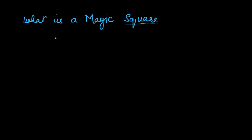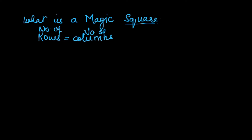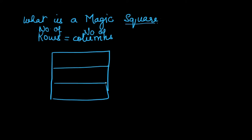As it is a square, the number of rows and columns will be the same. So in a magic square, suppose you have one which is 3 rows and 3 columns — the size of the magic square is 3 by 3. The first property is: number of rows is equal to number of columns.